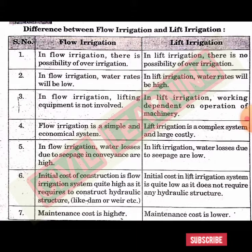Number four: flow irrigation is a simple and economical system — it is not complex, just simple and economical. In case of lift irrigation, it is a complex and costly system, which is why many times we do not prefer lift irrigation.